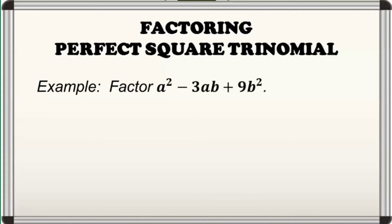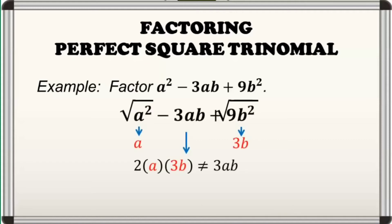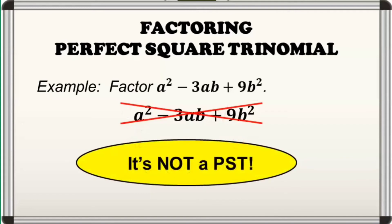For our third example, we have a squared minus 3ab plus 9b squared. If we look at it closely, the second requirement in the PST test was not satisfied since twice the product of the square roots of the first and last terms is not equal to our middle term. Hence, it is not a PST. This means that we cannot apply the steps in factoring out a PST. In this case, you can try other factoring techniques that would be applicable.